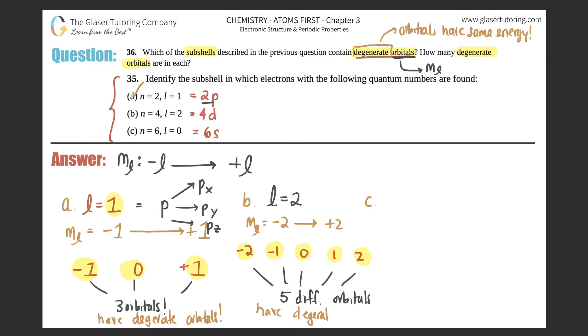So these would also have degenerate energy orbitals. Because they all have the same energy level, and they're all coming from the same l value. So that answer is b. So both a and b have degenerate orbitals.